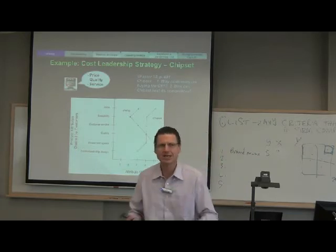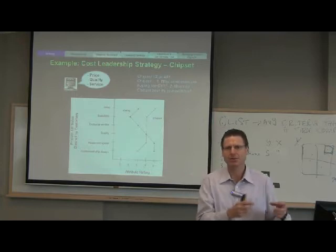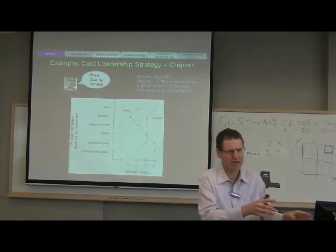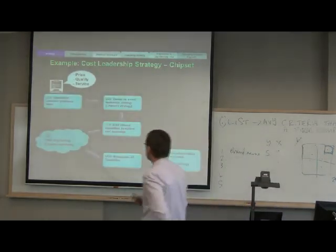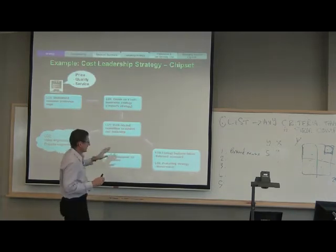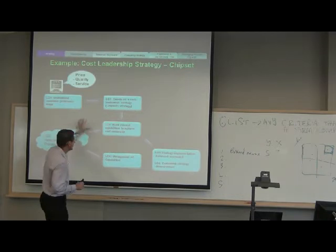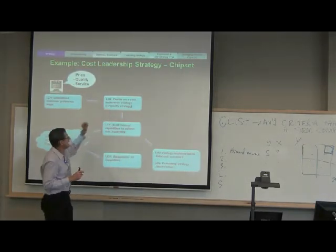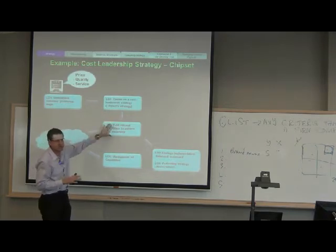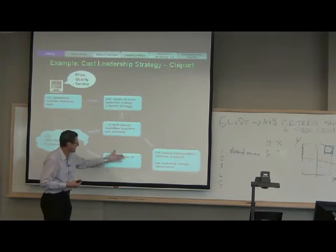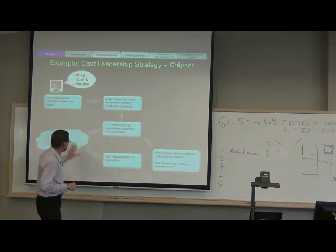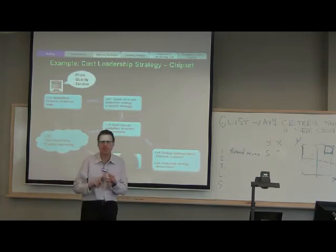When it comes to strategy, it really depends on who is competing with that company. When doing customer preference analysis, what choices do the customers have? It's a relative thing, not absolute. So we know Chipset is cost leadership. Now, knowing that, Chipset needs to build internal capabilities to achieve that strategy — to execute it — and also needs an effective way of managing those capabilities so it's sustainable. Some of this you'll pick up in an organizational management or advanced management accounting course.